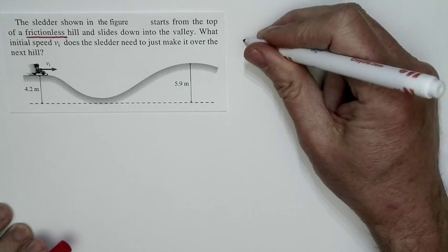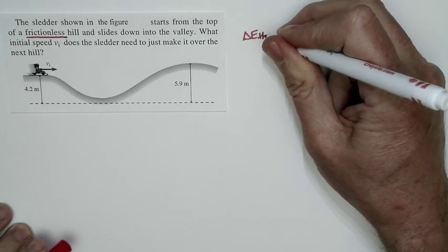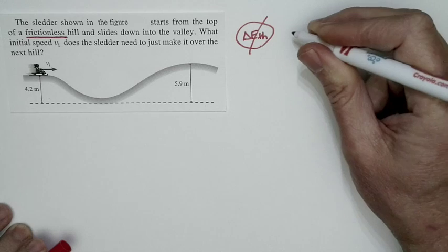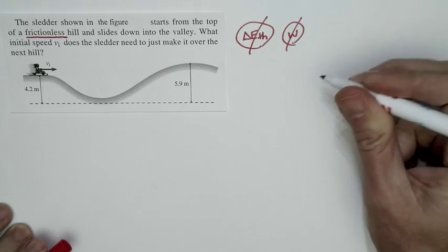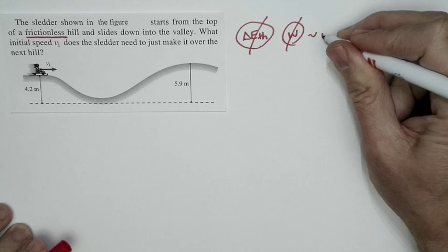It's frictionless. Frictionless tells us there's no change in thermal energy. There's no frictional forces. No work is done. So if no work is done, this is an isolated system.